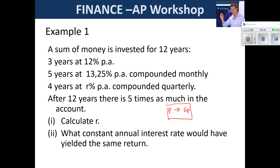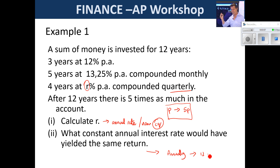We are asked to find R, which will be an annual rate but a nominal rate — per annum, but linked to a compounding frequency of compounded quarterly. Then they ask what constant annual interest rate would have yielded the same return — if we did this whole calculation annually over 12 years and went from P to 5P, what would the rate have been? Part two is significantly easier than you may have initially thought.